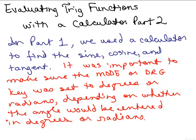This is part two of evaluating trig functions with a calculator. In part one, we used a calculator to find the sine, cosine, and tangent of angles, either given in degrees or radians. And it was important to make sure the mode or degree key on the calculator was set to degrees or radians, depending on whether the angle we were going to enter was in degrees or radians.